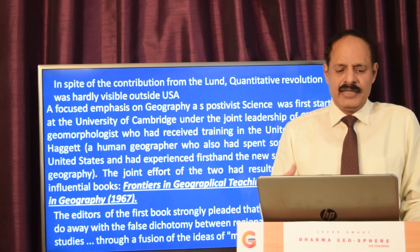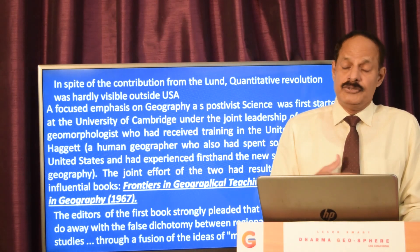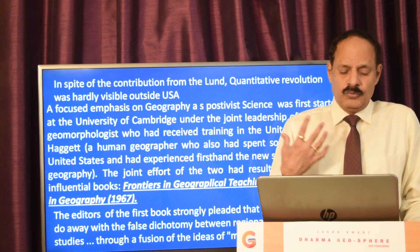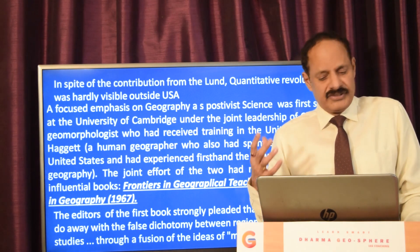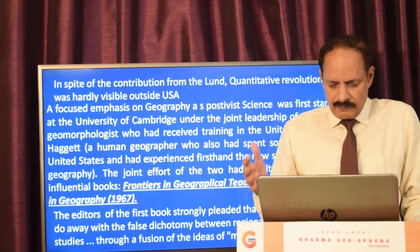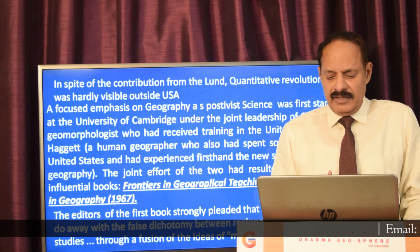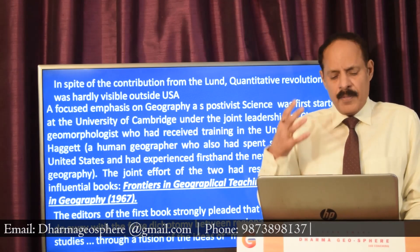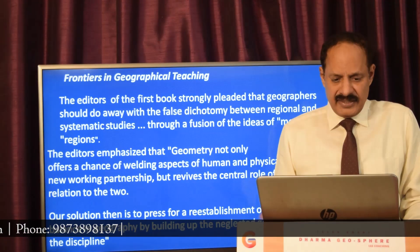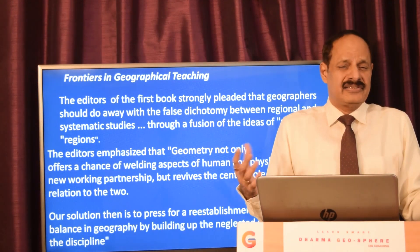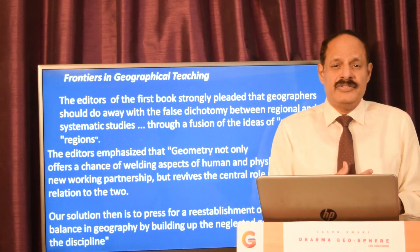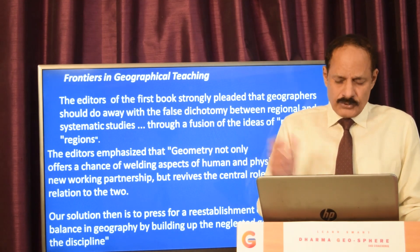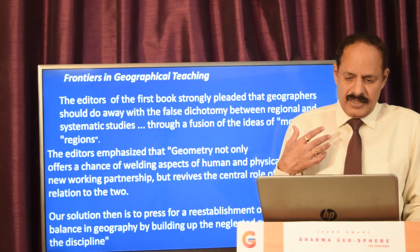In spite of the contributions from Lund, the quantitative revolution or theoretical-conceptual form of geography did not move outside the USA and was hardly visible. However, a focused emphasis on geography as a positivist science was started at the University of Cambridge under the joint leadership of Chorley and Haggett. Their joint effort produced two highly influential books: 'Frontiers in Geographical Teaching' and 'Models in Geography.' The editors of the first book strongly pleaded that geographers should do away with the false dichotomy between regional and systematic studies, physical and human geography.